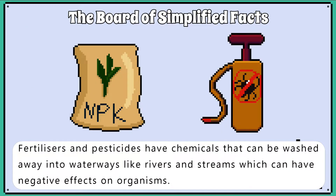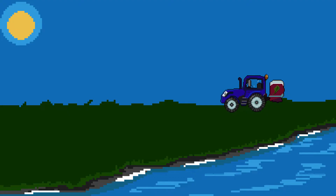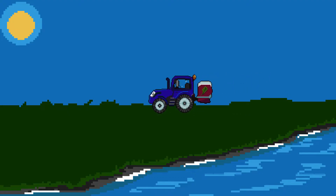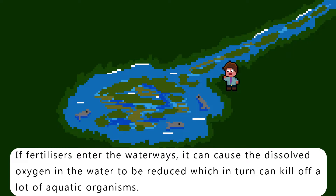Fertiliser and pesticides have chemicals that can be washed away into waterways which can have negative effects on organisms. When a farmer spreads fertiliser, there are guidelines and laws regarding when to do it and how much to use. If fertilisers enter the waterways, it can cause the dissolved oxygen in the water to be reduced, which in turn can kill off a lot of aquatic organisms and produce a dead zone.